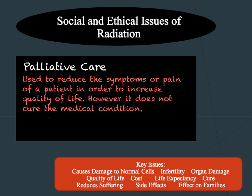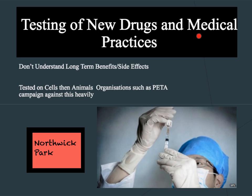There are also other social and ethical issues concerned with both radiotherapy and other hospital treatments, including stem cell research and cloning. For any new drug or medical practice, a lengthy testing stage will be used — going through computers, then cells, then animals, before being tested on humans. However, organisations such as PETA campaign against this heavily. A major concern is that we don't understand the long-term benefits or side effects of a drug. Even with extensive testing, things can still go wrong, as was the case in the Northwick Park trials of the early 2000s, where a drug tested on humans for the first time led to severe side effects.